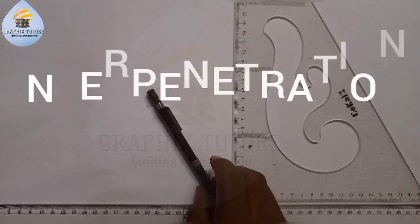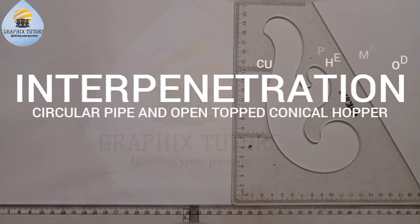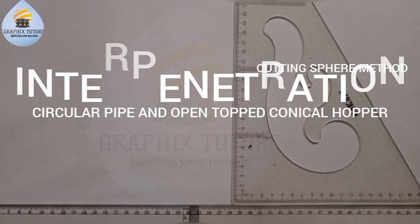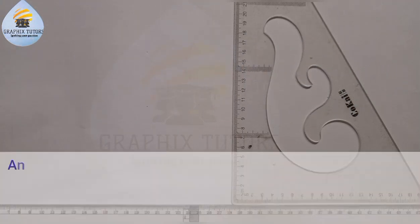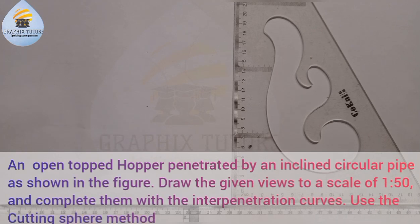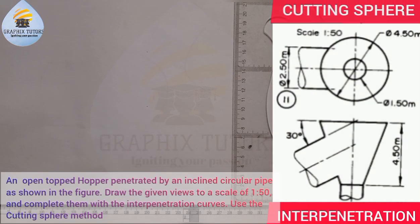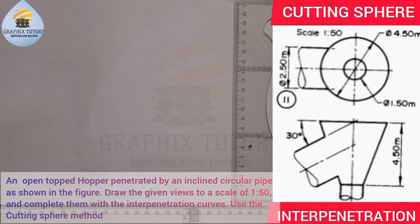Good everyone, my name is Graphics. In this video we want to solve a problem involving interpenetration. The question goes like this: an open-topped conical upper penetrated by an inclined circular pipe as shown in the figure. Draw the given views to scale of 1:50 and complete them with the interpenetration curve using the cutting sphere method.